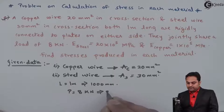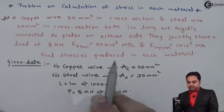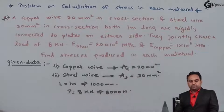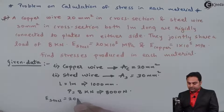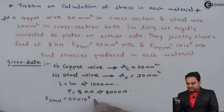They jointly share a load of 8 kilonewton, so capital P is 8000 newton. Young's modulus for steel is 20 × 10⁵ MPa, and for copper it is 1 × 10⁵ MPa.